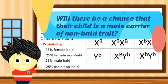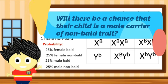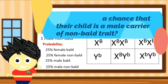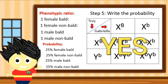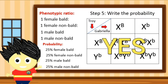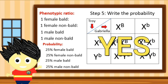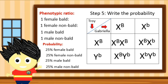Answering the question from our genetic problem: will there be a chance that their child will be a male non-bald carrier? The answer is yes, because based on the result of our Punnett Square, there is a 25% chance that their child will be a male carrier of the non-bald trait.